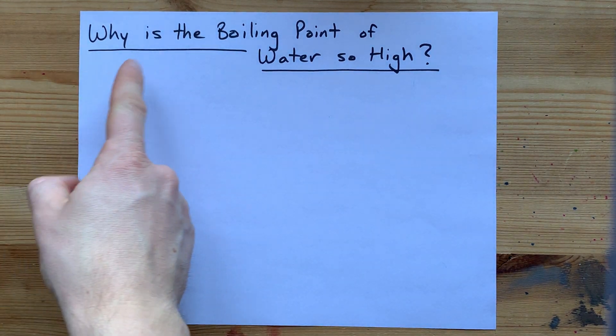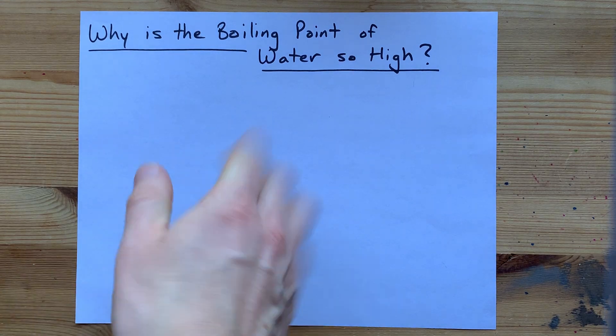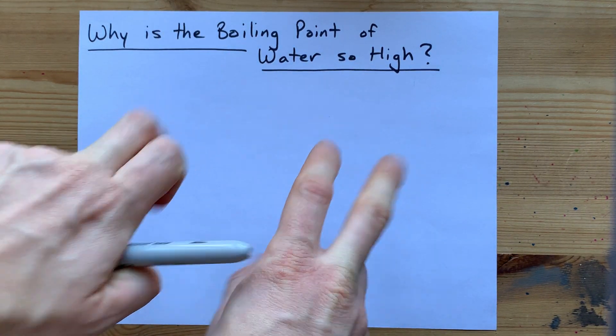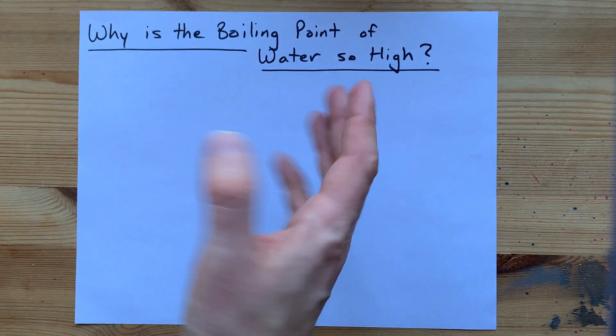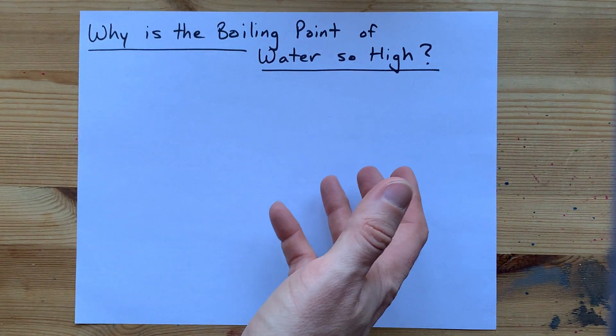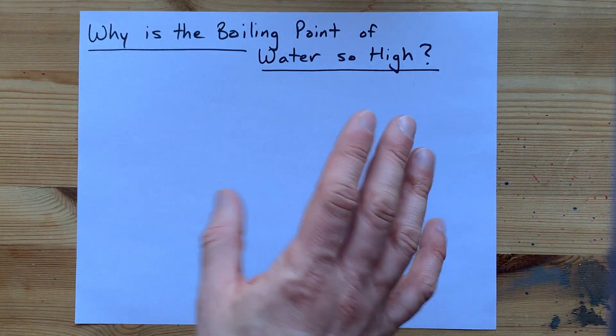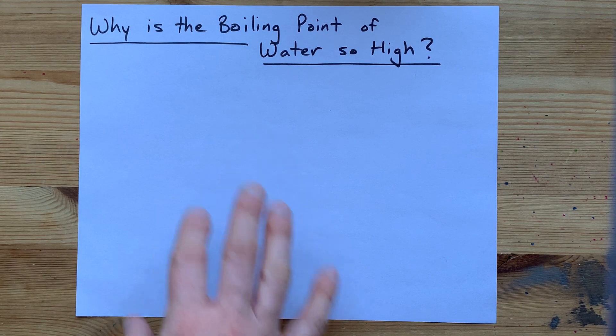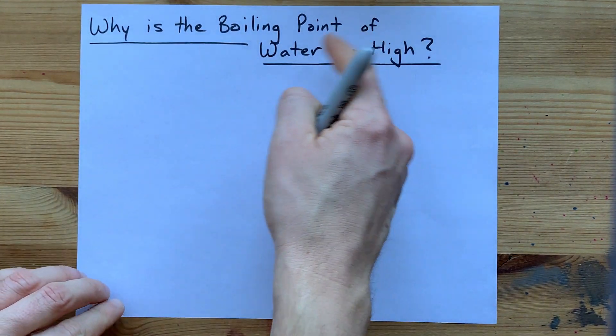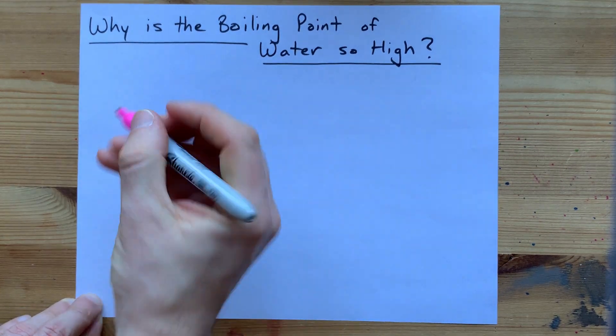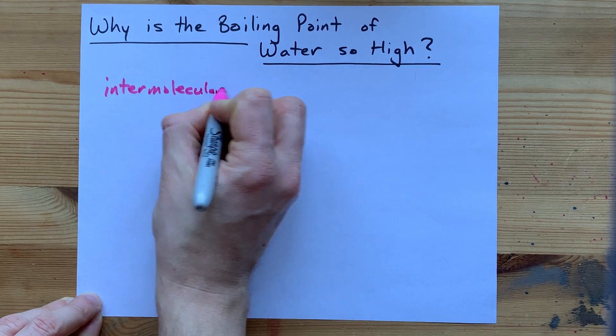Question from a viewer, why is the boiling point of water so high? Now, first of all, so high is not exactly the words I'd use. Ionic compounds take way more energy, way higher of a temperature to boil. Covalent networks are similar. But in terms of covalent compounds, yeah, water's got a high boiling point. The reason your teacher wants to hear is intermolecular forces.